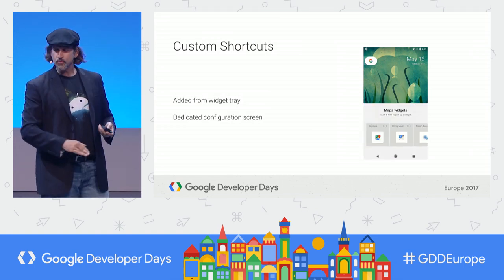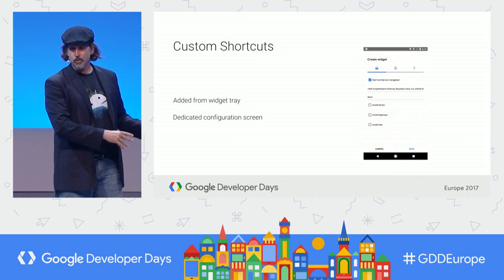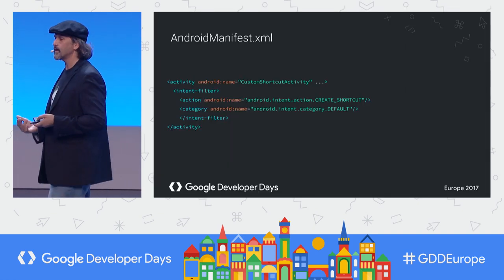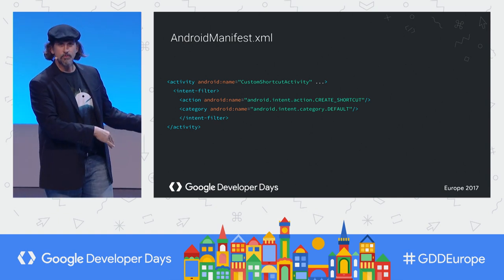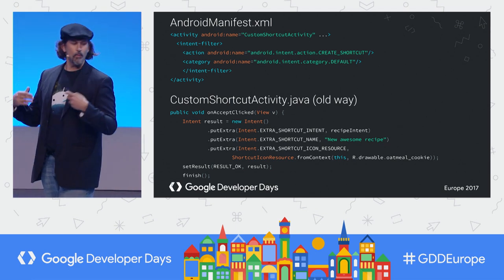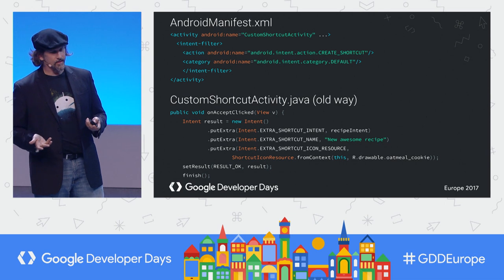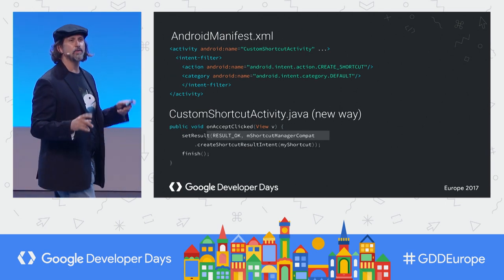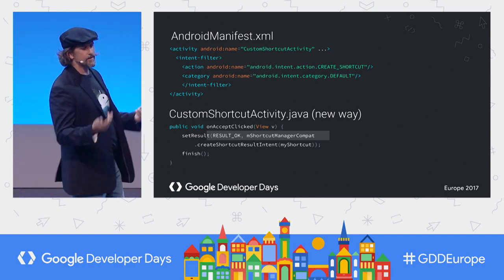Custom shortcuts were also in 7.1, allowing shortcuts to be added from the widget tray with an optional configuration screen. The Oreo API is an improvement. As before, you register the custom shortcut activity with the create shortcut intent filter. In 7.1 it would return the shortcut as intent extras directly to the activity return, but now we wrap all of that functionality, which also allows the app to update the shortcut.